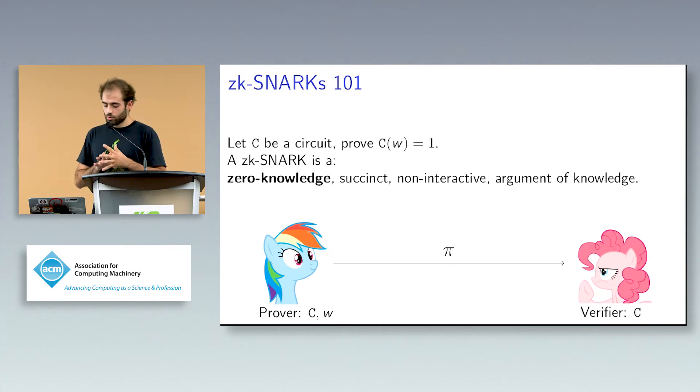Then we would like also this protocol to be zero-knowledge. This notion protects the prover and it basically says that the proof does not leak any information other than the fact that this input W satisfies the circuit. What we formally say is that there exists a simulator that generates proof that are indistinguishable from honestly generated ones. And this proof can be simulated without knowledge of the witness. So as you can see, these sort of two properties balance each other out and we will see what this implies a bit later.